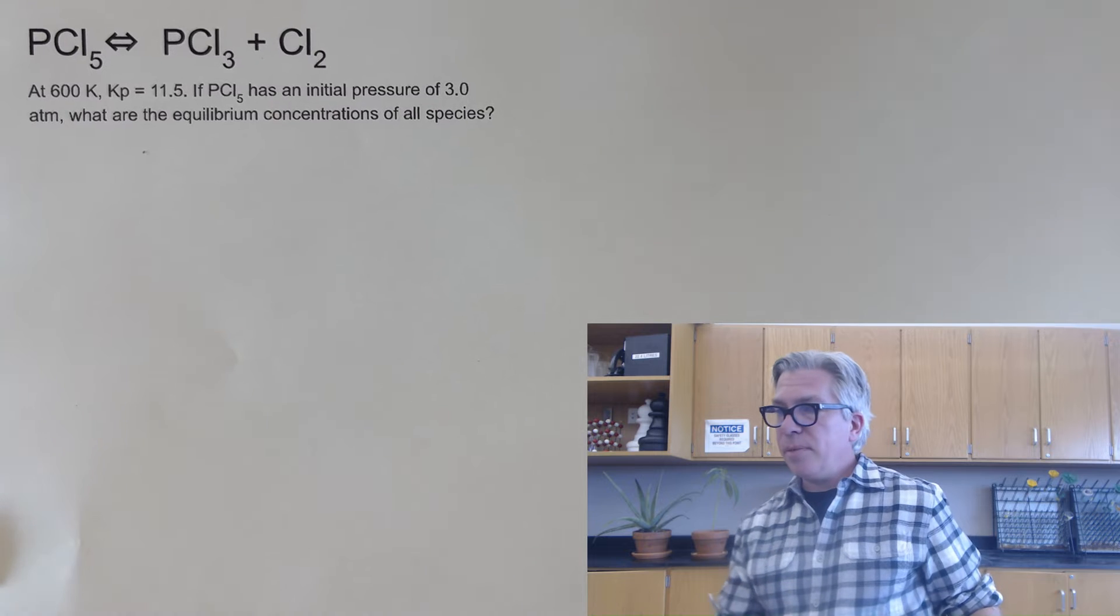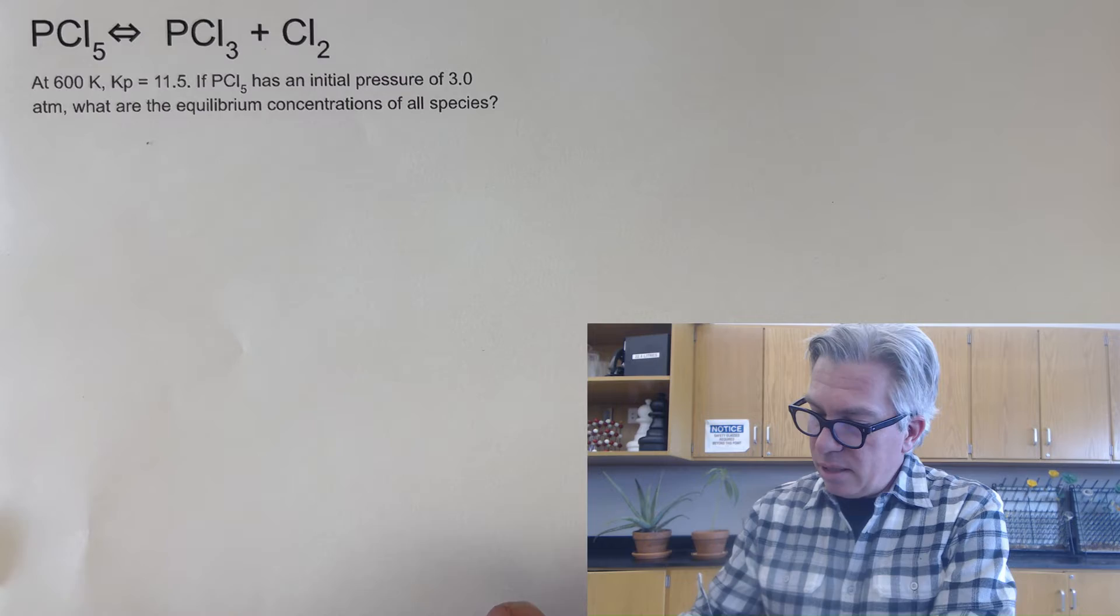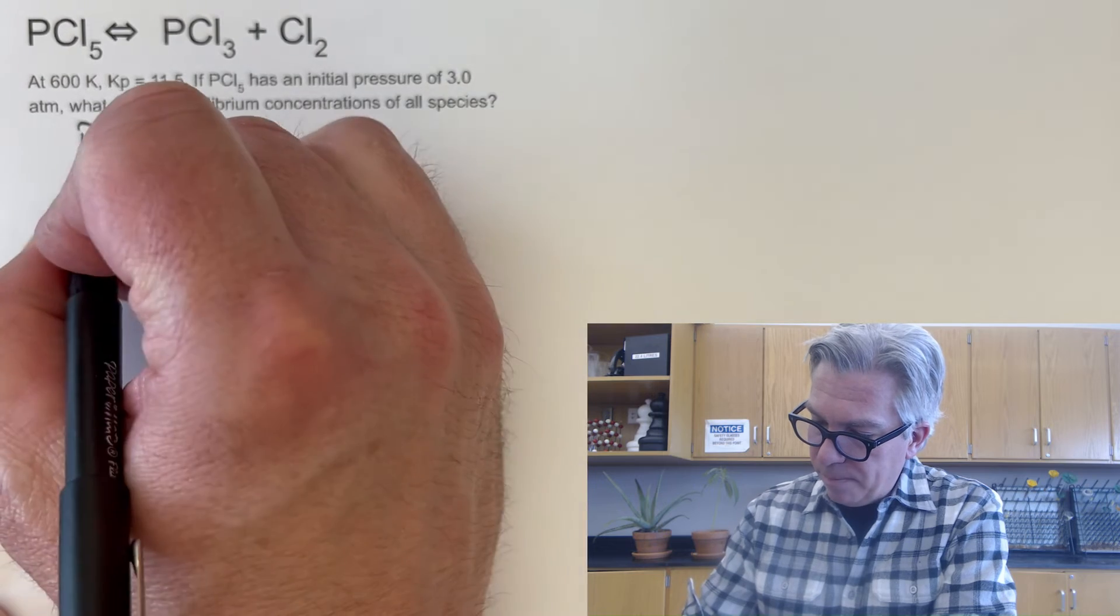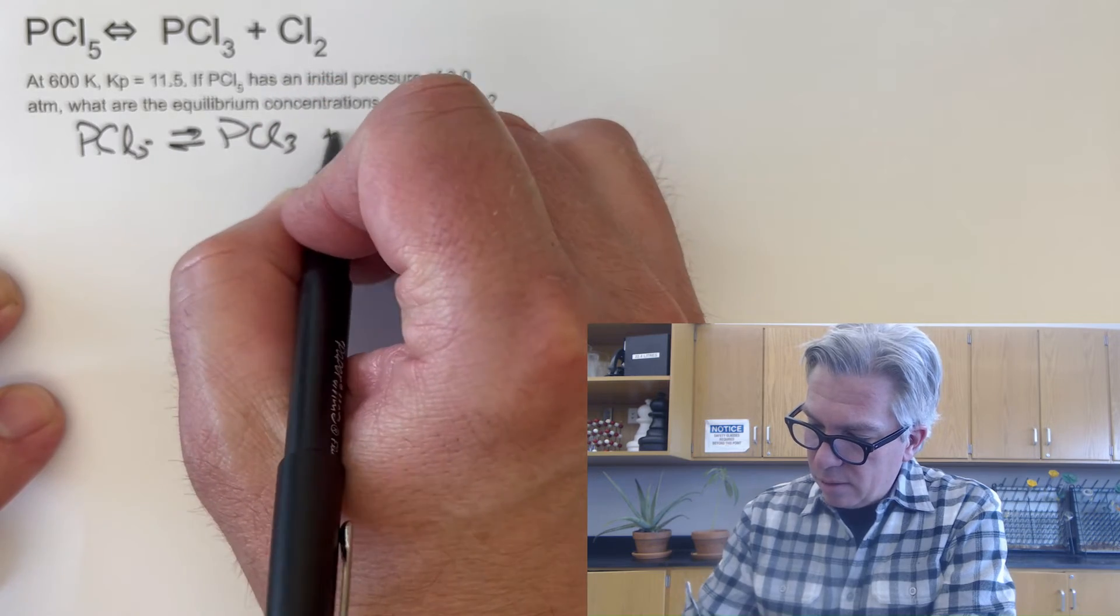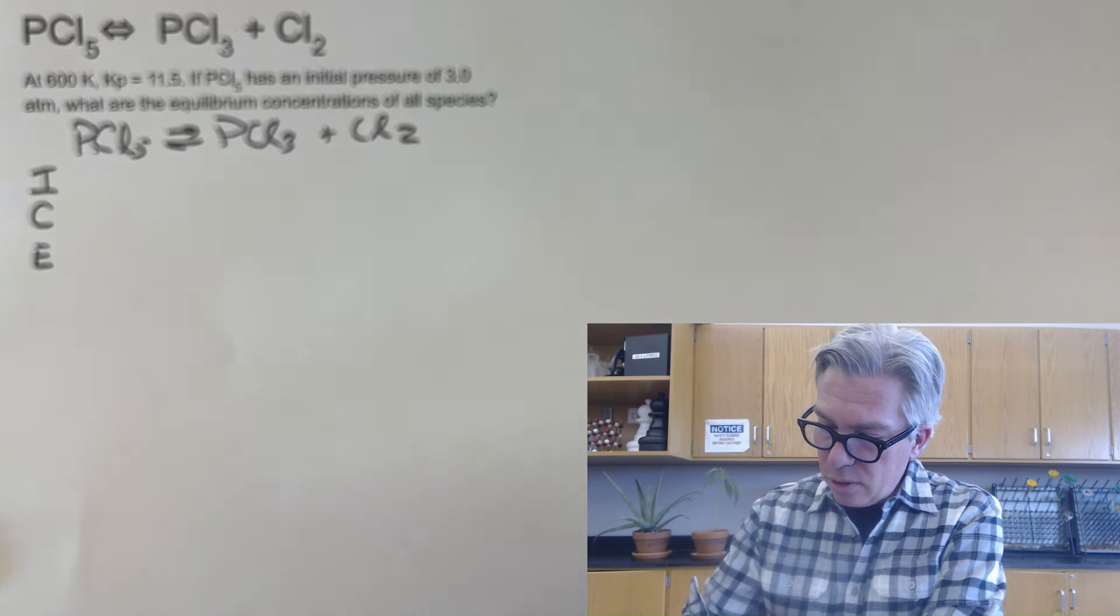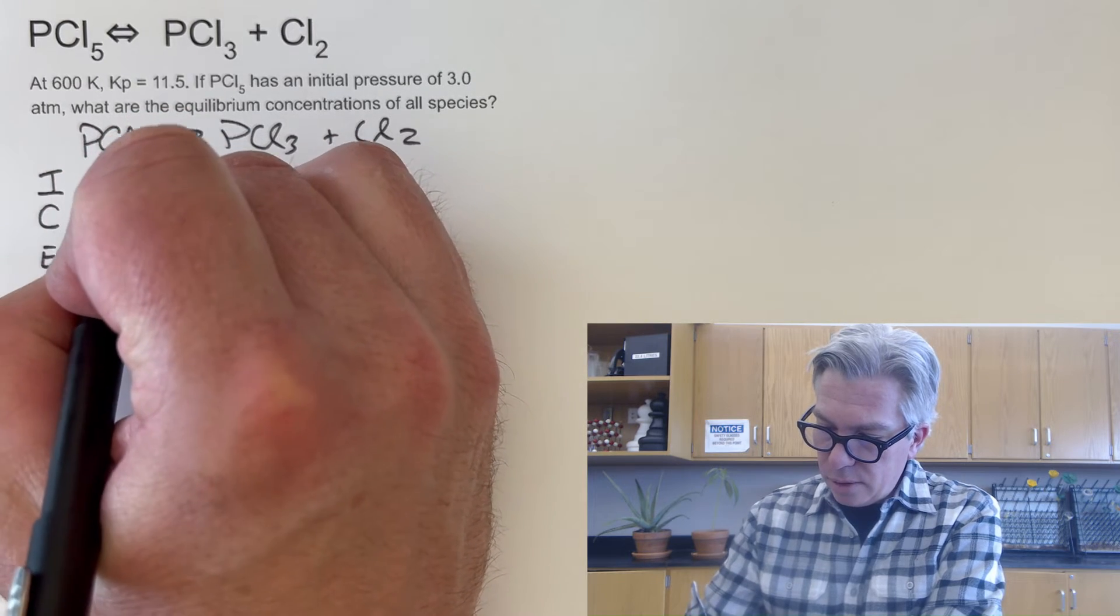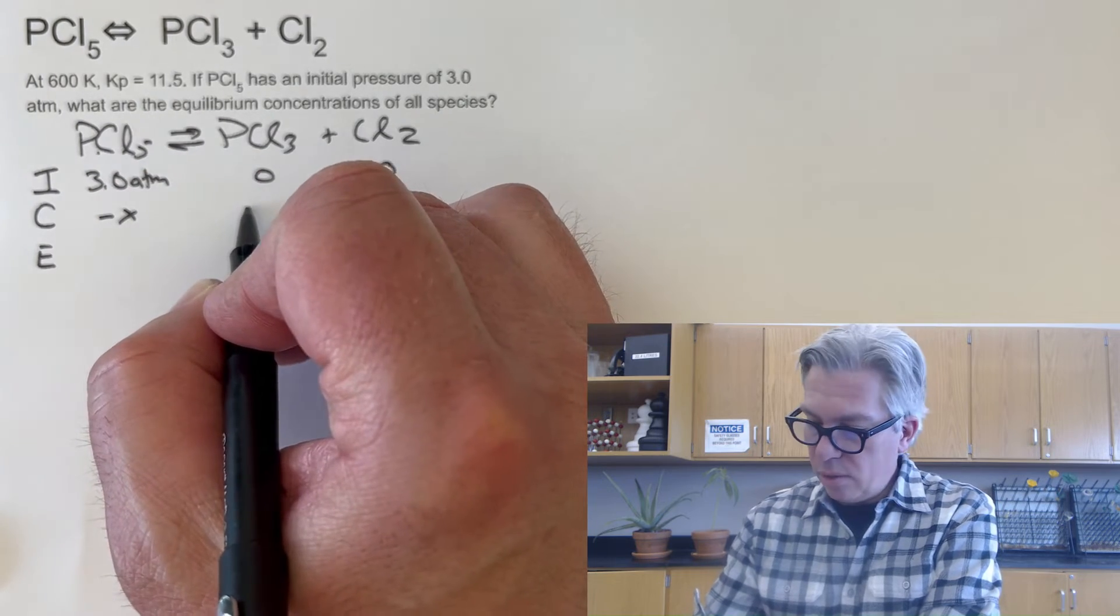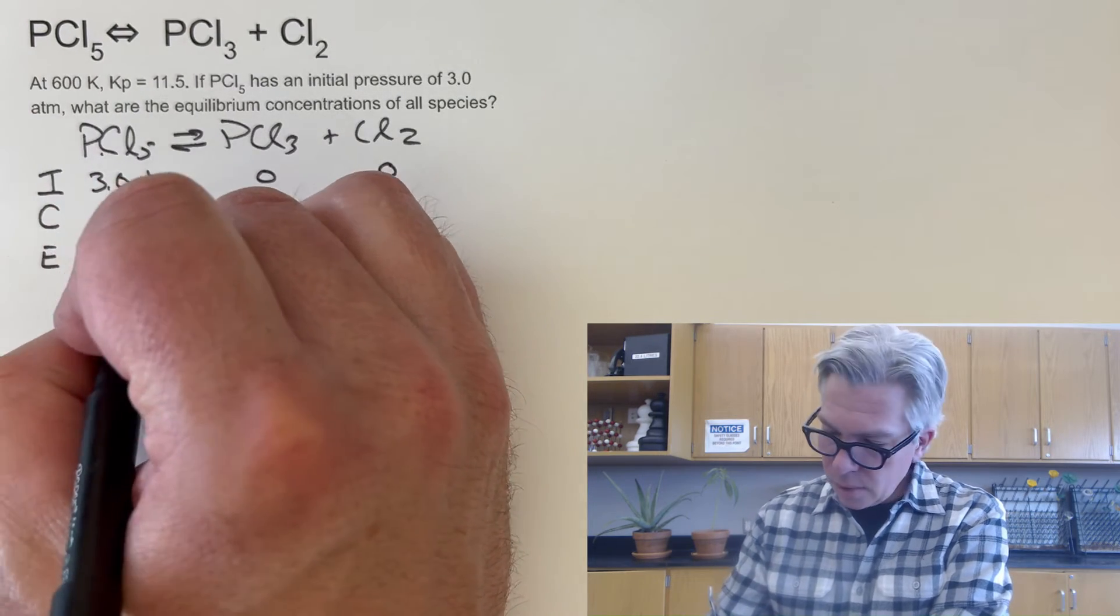Let's try one more with me and then I'll have one more pause the video moment in just a little bit. So here's my question. It's a similar reaction. The KP value is 11.5 and the PCL5 has an initial pressure of 3.0. So we're going to solve this one. We're going to do an ice table. Again, we're finding the final equilibrium concentrations or pressures of all species. So we'll set up our ice table. We're told the initial pressure is 3.0 ATM, zero of those. This is going to go down by X. This is going to go up by X and up by X. This is all one to one ratios. So 3.0 minus X, X and X.